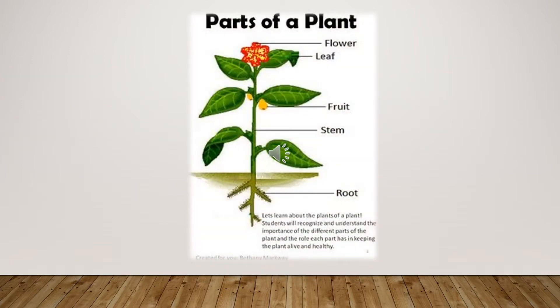Children, see this picture carefully. What is it? It is a plant. Like humans and animals, plants also have different parts. Each part of the plant has important functions, and these parts work together to live and grow. So remember this, children: these parts always work together to live and grow.